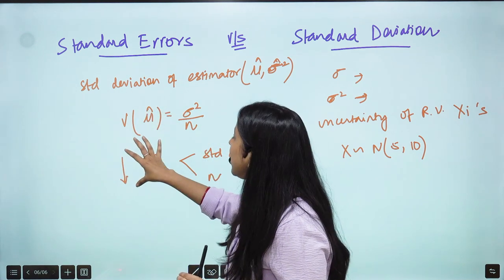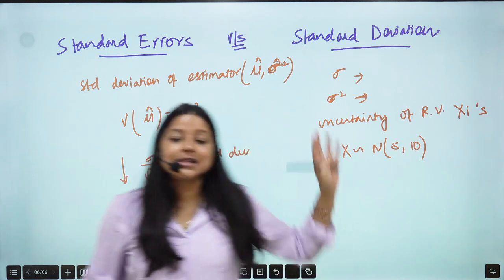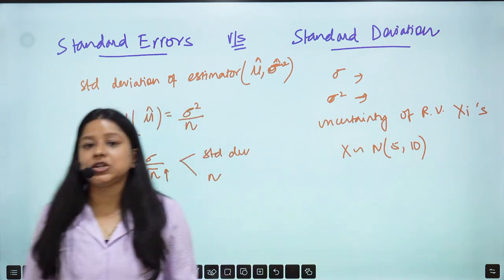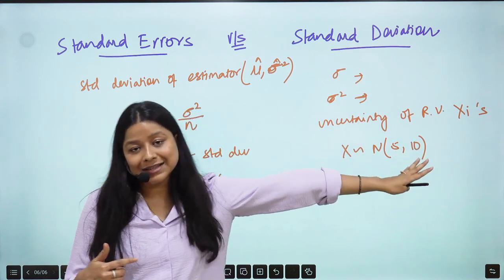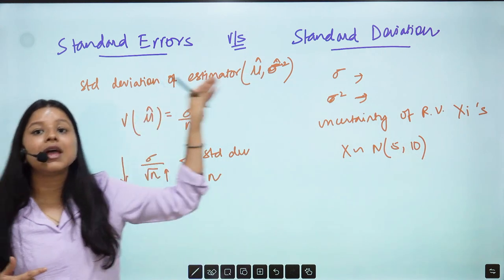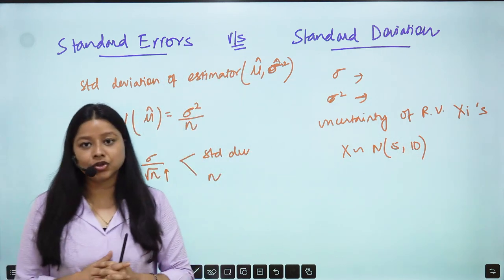But obviously if your Standard Error is high, accuracy is less. Standard Deviation however will not change if your sample size changes. This is nothing but the uncertainty in the random numbers, xi's or the data which is given. This is the standard deviation of the estimator. This is something which we already derived and I have shown you.